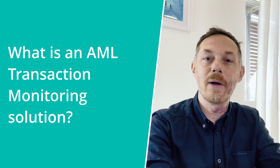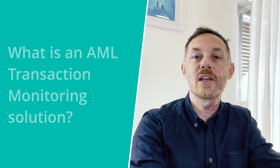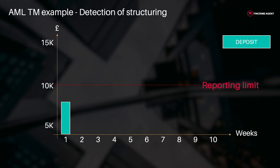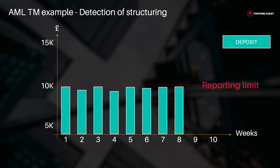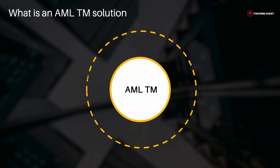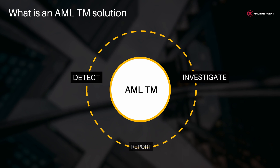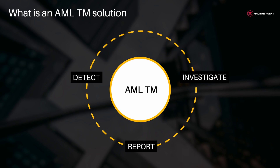So let's see first what is an AML-TM solution. AML Transaction Monitoring is the process of detecting suspicious financial transactions that may be indicative of money laundering. An AML Transaction Monitoring solution helps financial institutions detect, investigate, and often report unusual activities of their customers, generally through a processing management system, as well as using algorithms and models to spot those unusual customer activities.